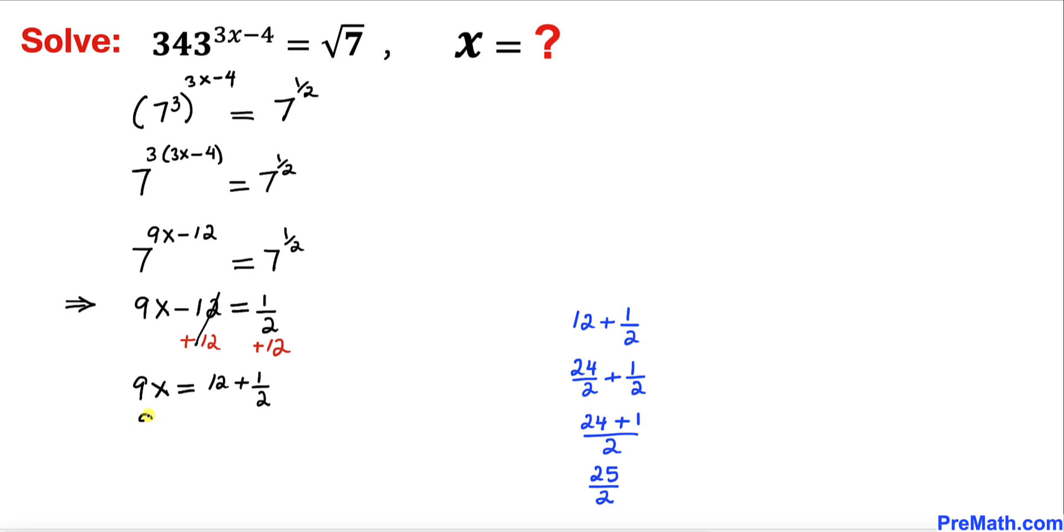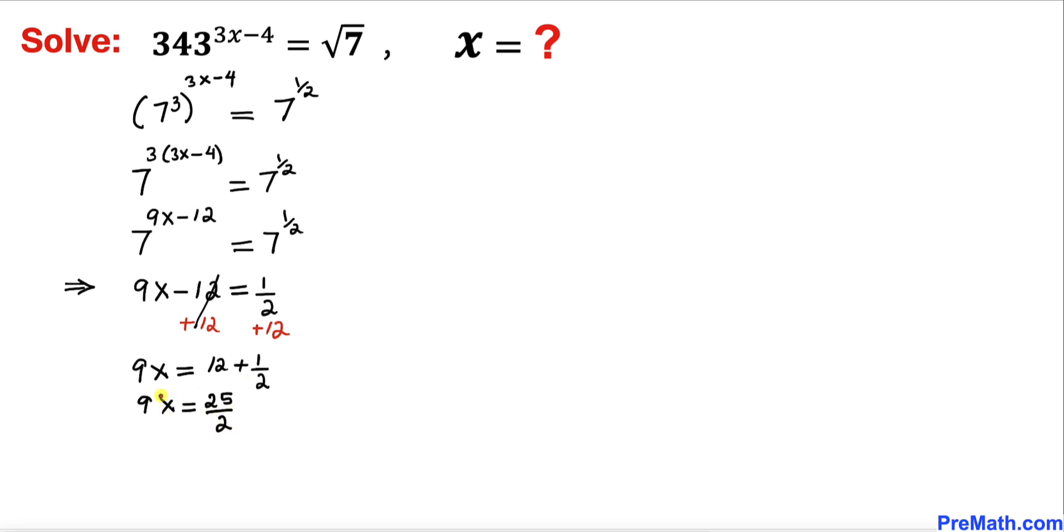So therefore our equation is going to become 9x equals to 25 divided by 2. Now let's go ahead and isolate x. So therefore I'm going to multiply by 1 over 9 on both sides. We simply ended up with x equal to 25 over 18.